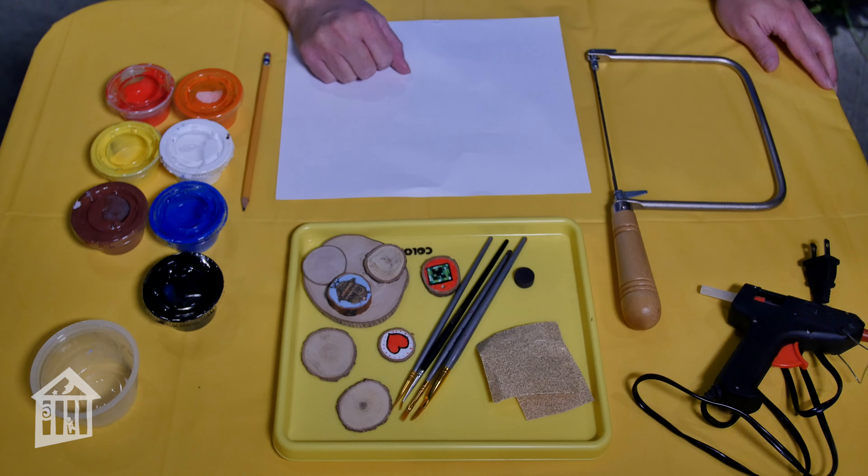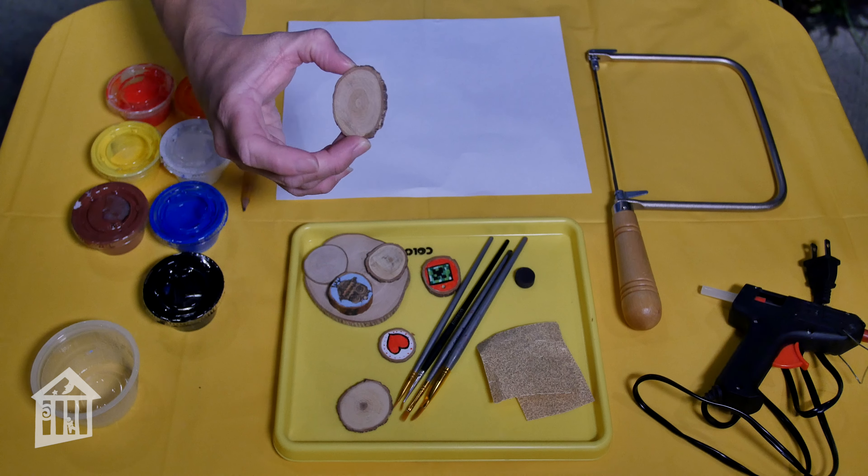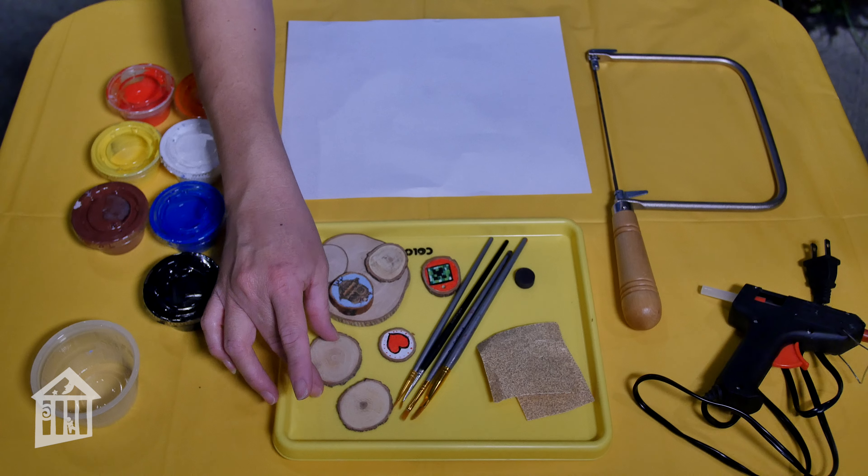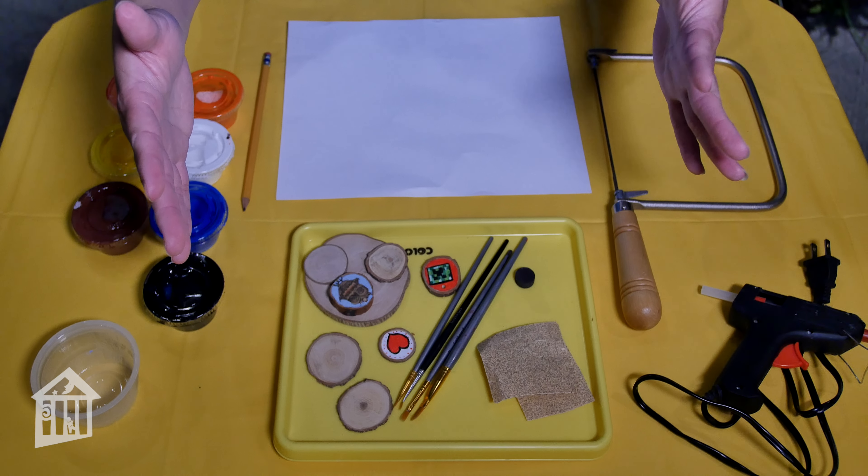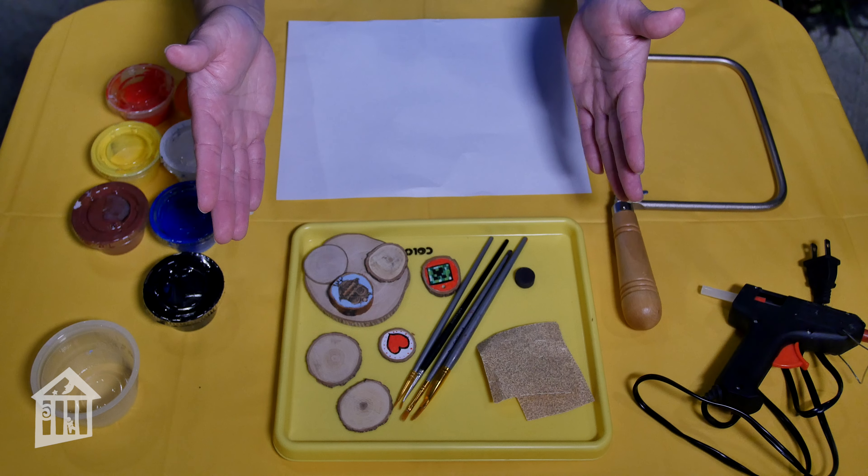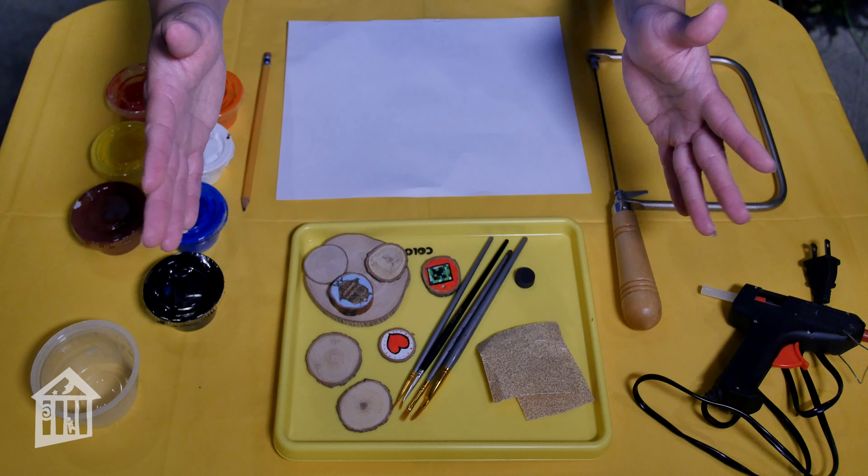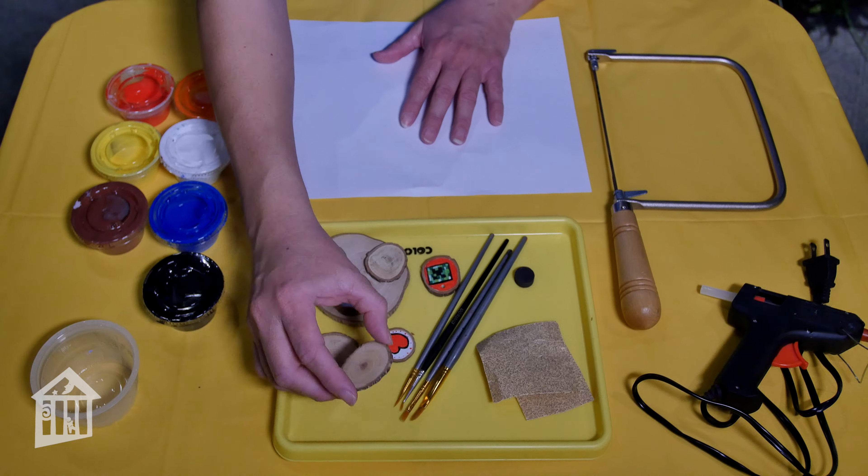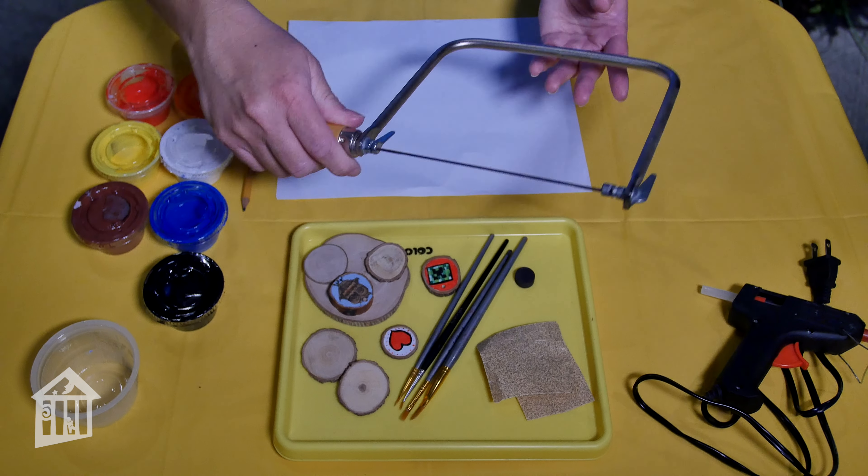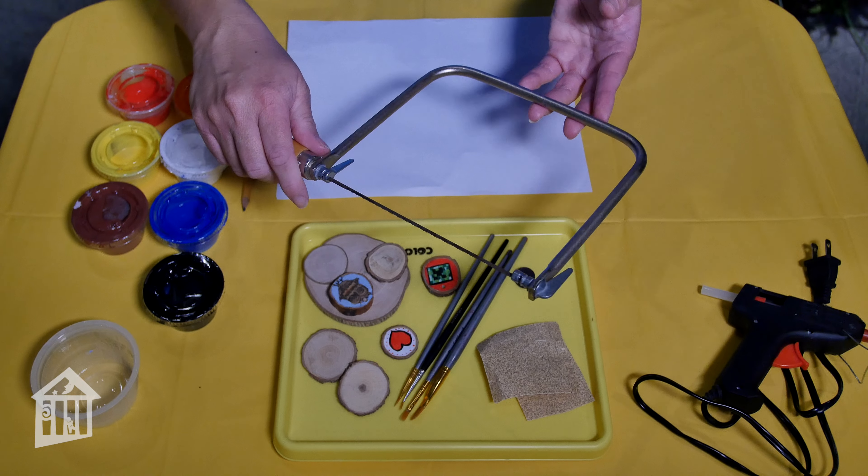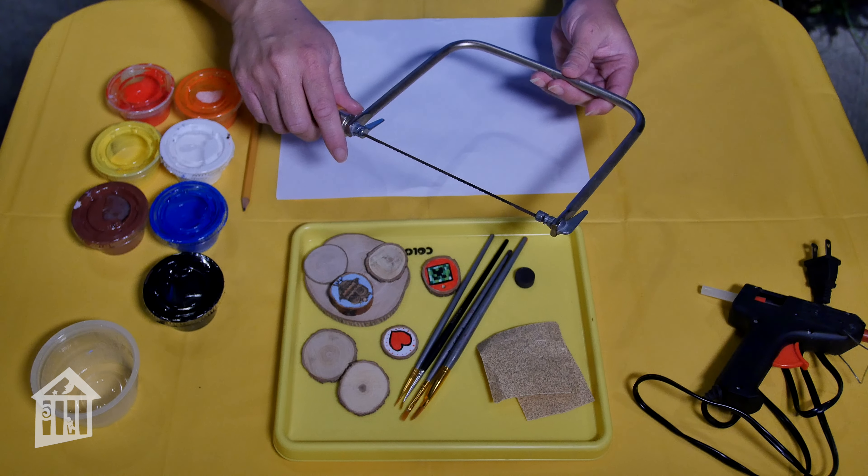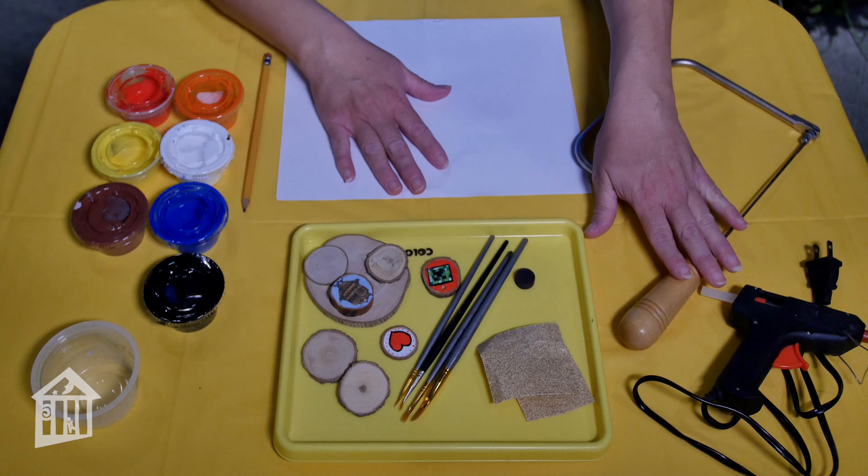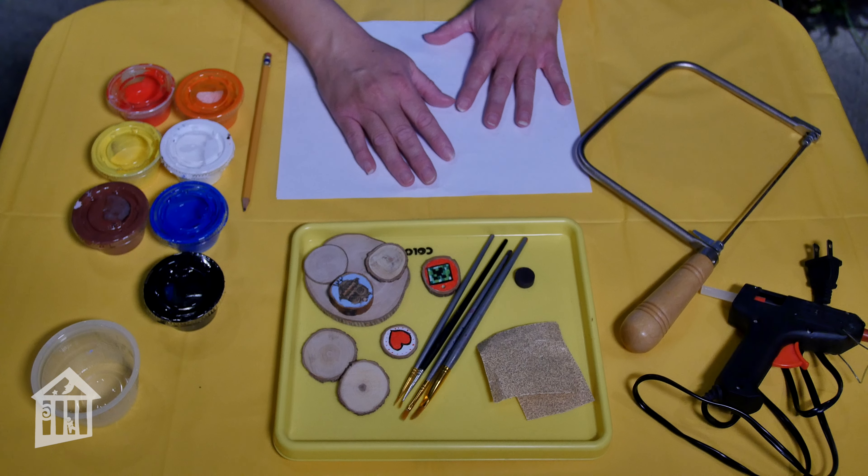So the supplies you'll need for this project are of course your wood slice, and the way that I get my wood slices is I do maintenance on my yard every year and I'll cut big pieces of branches and I'll let them sit for a good six months. So you want to do this when you're doing your regular yard maintenance. And then I used a band saw to slice these. You can also use a coping saw, and when I say you I don't mean you, I mean your adult helper, because some of these supplies like the hot glue gun and the cutting tools need to be done by an adult helper.